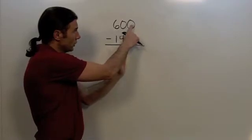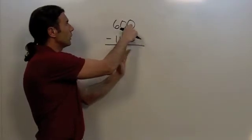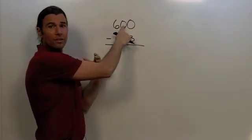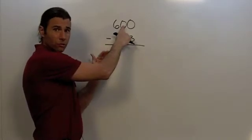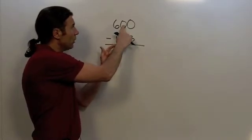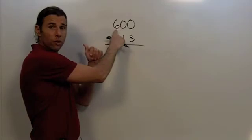So what I'm going to need to do is I'm going to need to borrow. But when I go to the next place value, notice I have another 0. I won't be able to borrow from this place as well, so I've got to come all the way over to the hundreds place value before I can start borrowing.